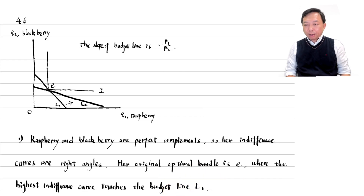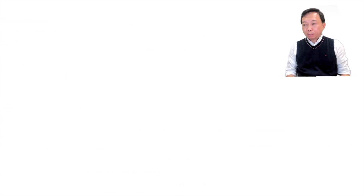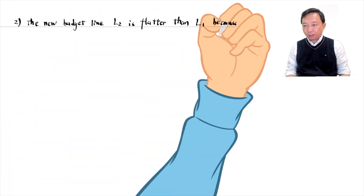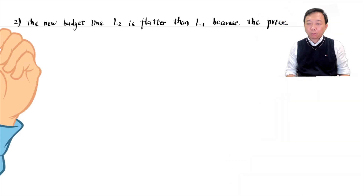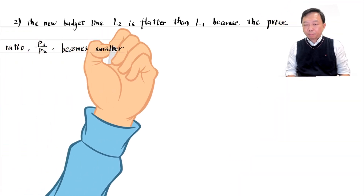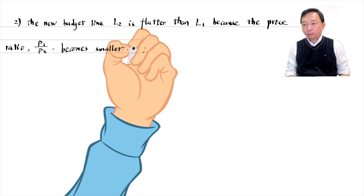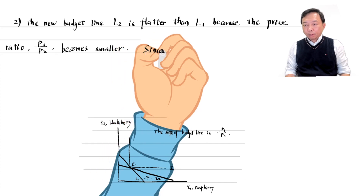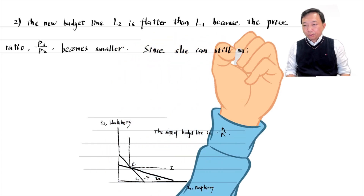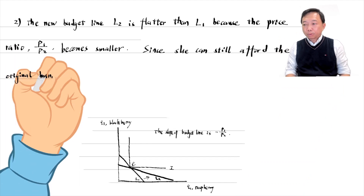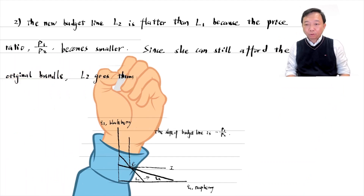In the second step, we draw the new budget constraint, L2, which is flatter than L1 because the price ratio P1 over P2 becomes smaller. The negative price ratio is the slope of the budget line. Since she can still afford the original bundle, the new budget line goes through the original bundle E.